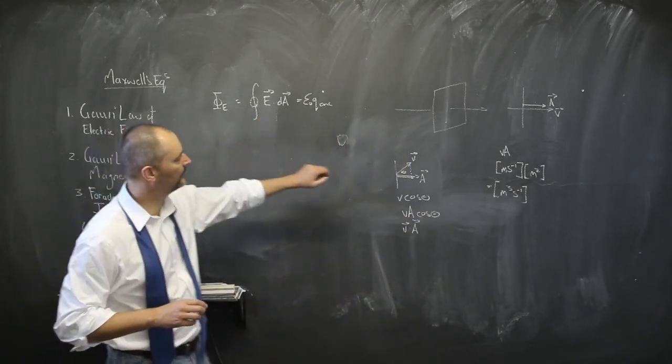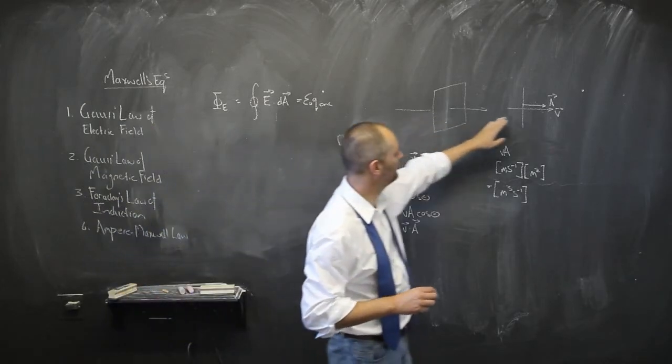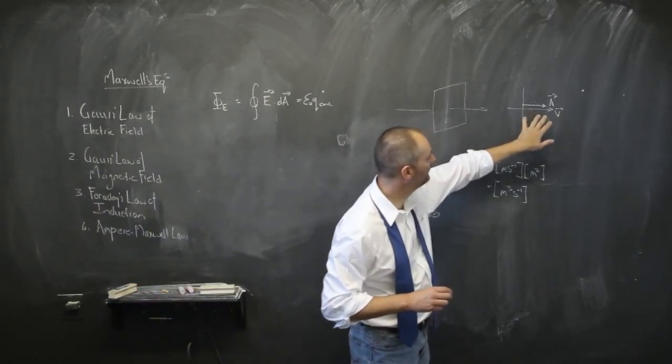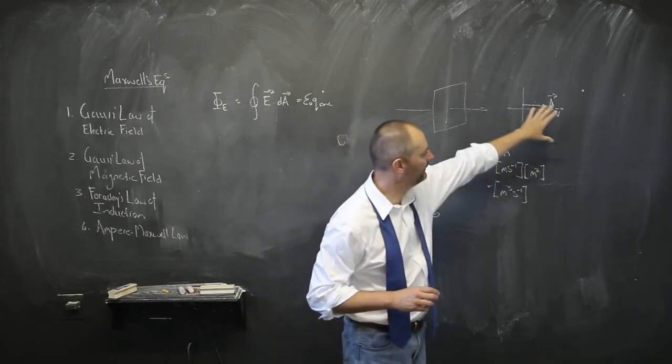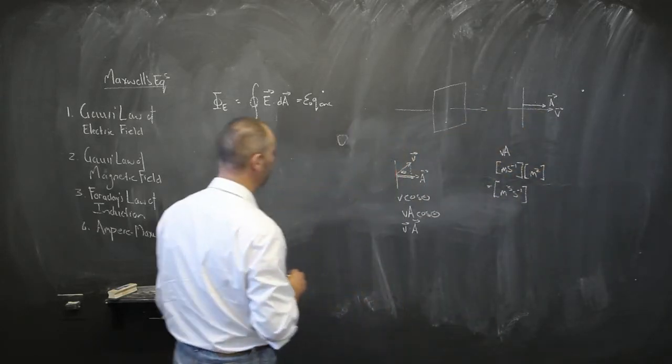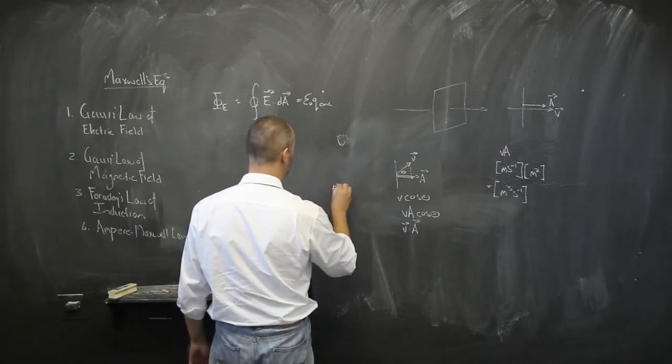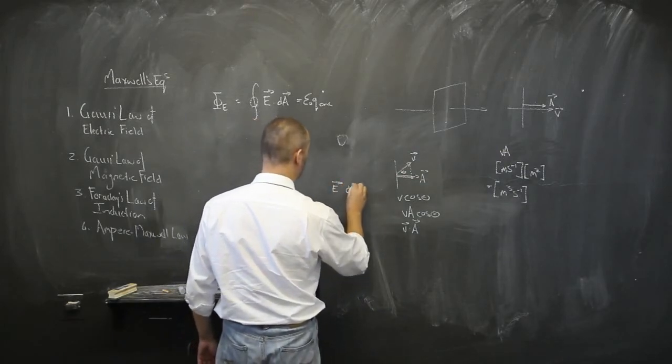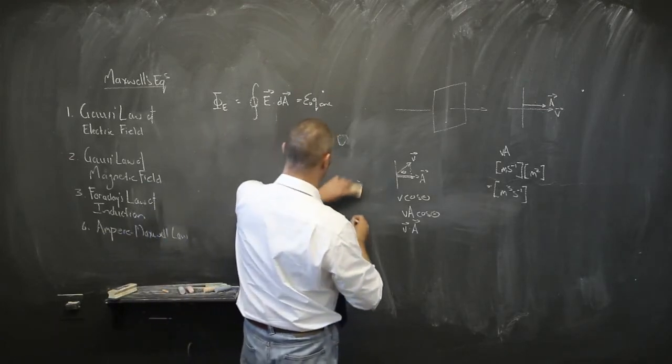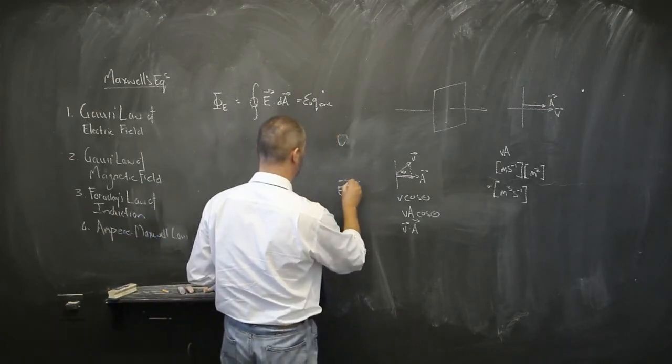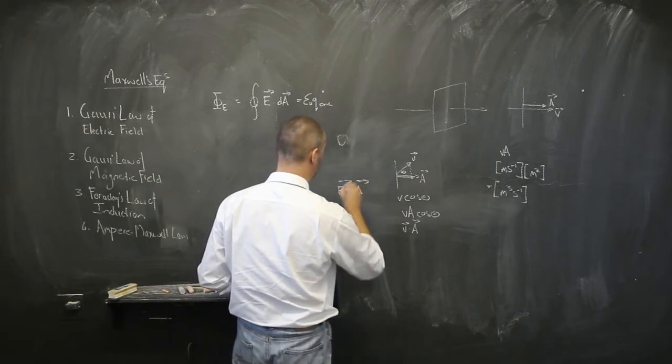And all we did here was to say, let's not make this flow rate velocity of a fluid, let's make that the electric field. So we were just going to get electric field dot product with the area vector, and I should just say E dot A.